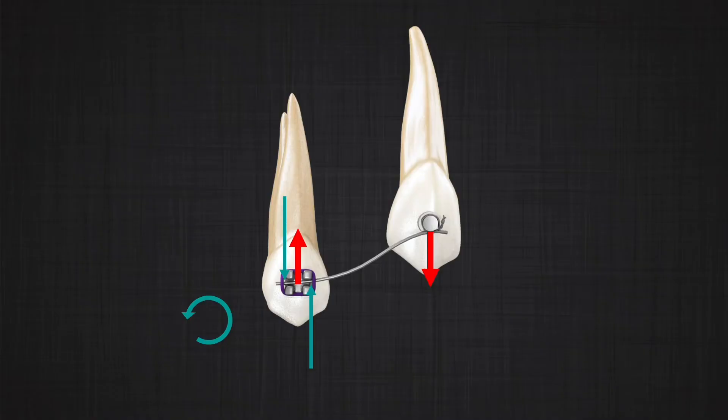Now you understand why it's called the one couple system. You might think: there are two couples in the system, so why one? It's clear: only one tooth receives a couple — the premolar. The canine has only one contact point and does not receive a couple. So even though two couples appear in the wire, by definition only one tooth receives a couple. When analyzing the one couple system, we focus on the forces and moments the wire produces on the teeth — how the teeth react is a separate story.